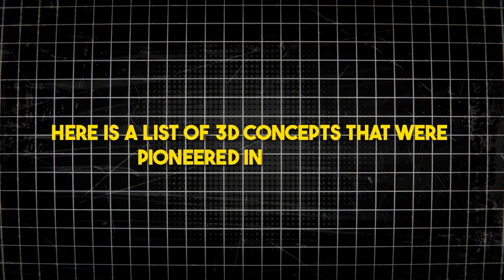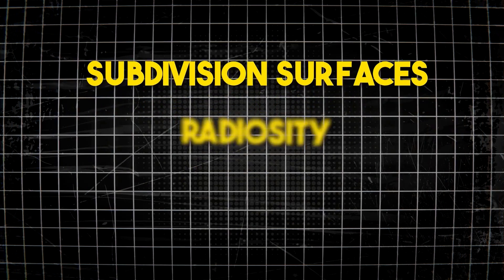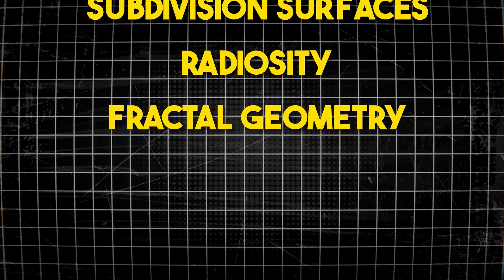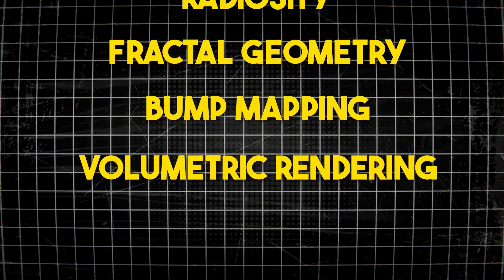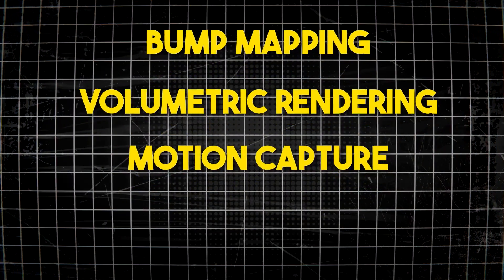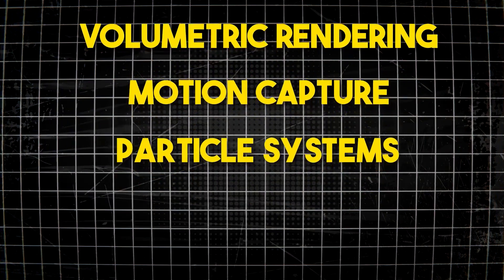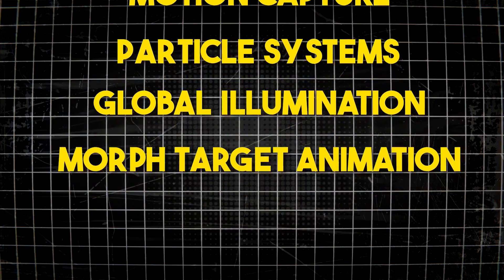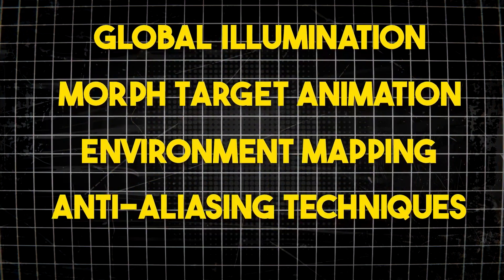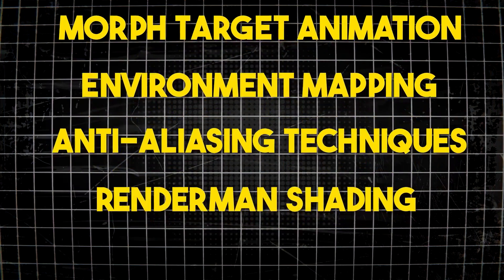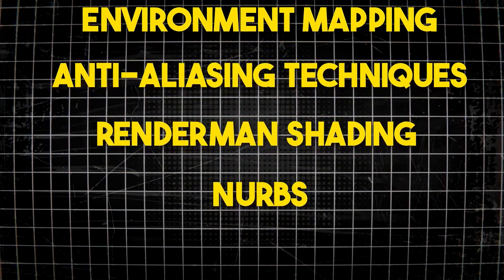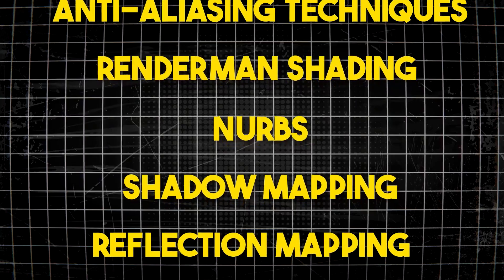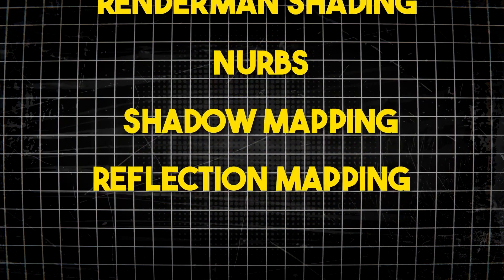Here is a list of some of the most important 3D concepts pioneered in the 80s: Subdivision Surfaces, Radiosity, Fractal Geometry, Bump Mapping, Volumetric Rendering, early development of Motion Capture, Particle Systems, Global Illumination, Morph Target Animation, Environment Mapping, Advanced Anti-Aliasing Techniques, RenderMan Shading Language, the creation of NURBS, Shadow Mapping, Reflection Mapping, and many other developments.